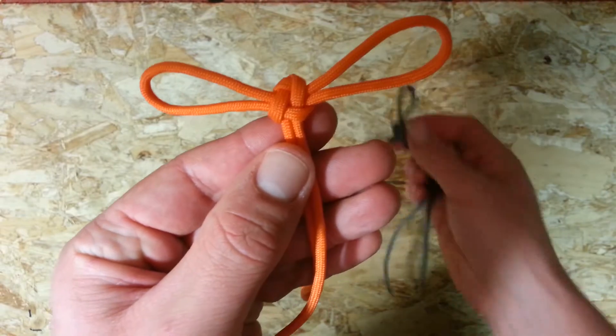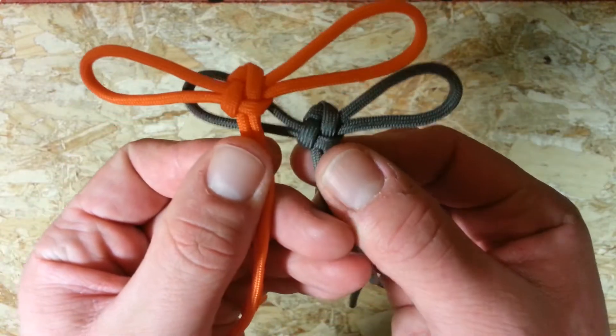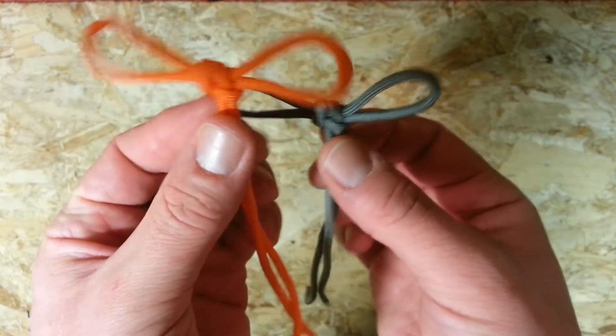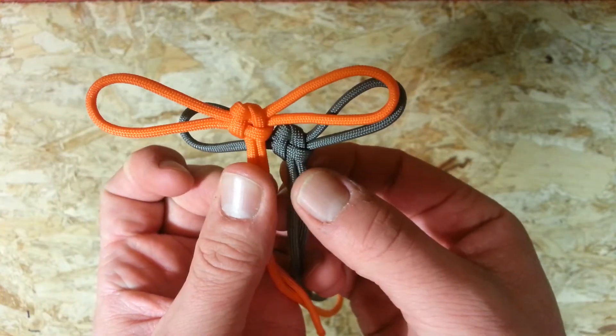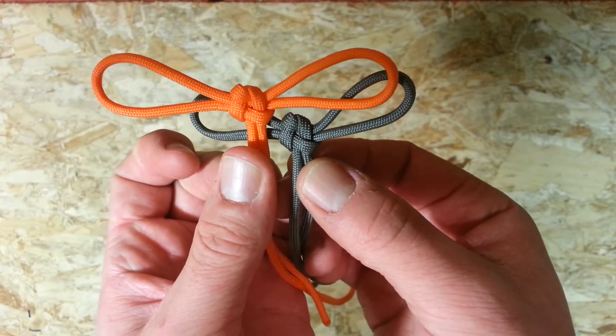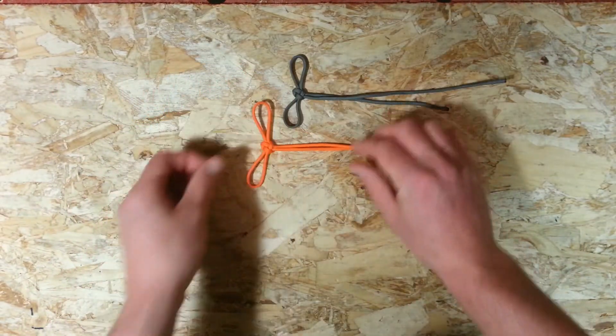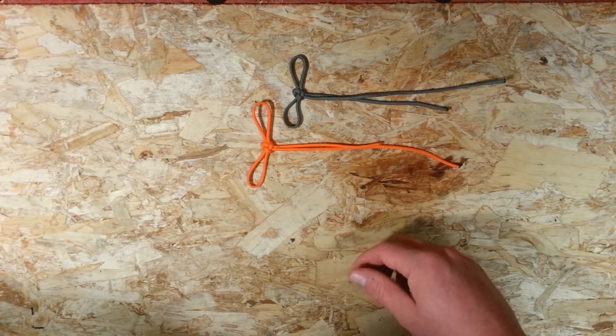And your knot should look like this. Lift up the original one we had there. As you can see. And the reverse should look like that. So I'm just going to do that one more time. Let's put those down there. Grab ourselves another piece of cord.